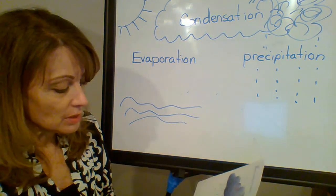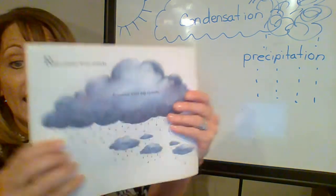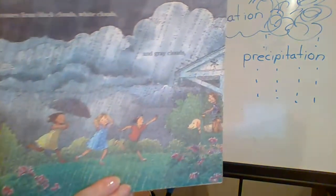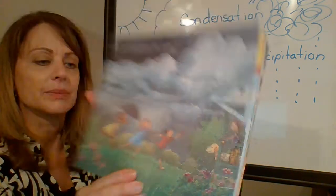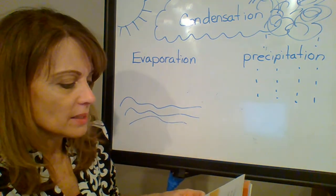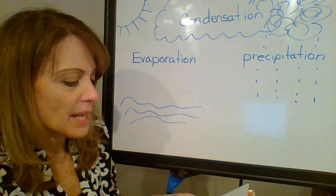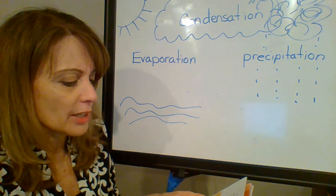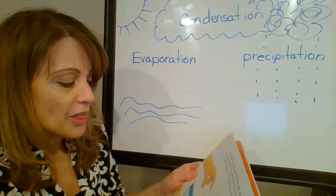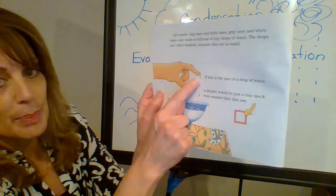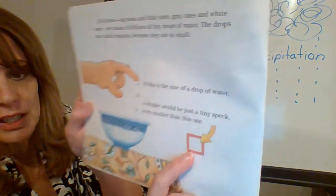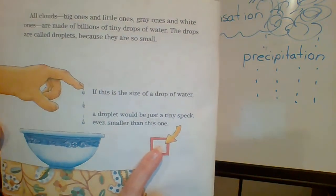Rain comes from clouds. It comes from big clouds and little clouds. It comes from black clouds, white clouds, and gray clouds. All clouds, big ones and little ones, gray ones and white ones, are made of billions of tiny drops of water. The drops are called droplets because they are so small. If this is the size of a drop of water, a droplet would be just a tiny speck, even smaller than this one.